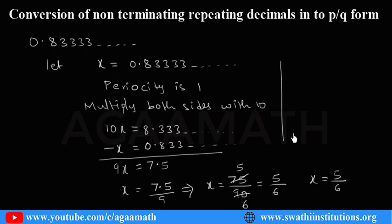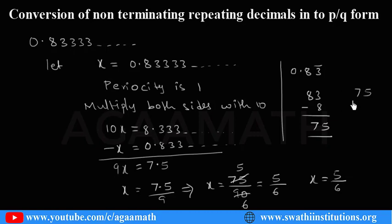Using the short method for 0.83 bar: write the complete number 83, then subtract the non-repeating part, which is 8. So 83 minus 8 equals 75 — that goes in the numerator. How many digits are repeating? Only 1 digit, so write one 9; and without repetition there is 1 digit in the decimal, so write one 0. That gives 75 by 90, which simplifies to 5 by 6. This is the short method; the other was the actual method.